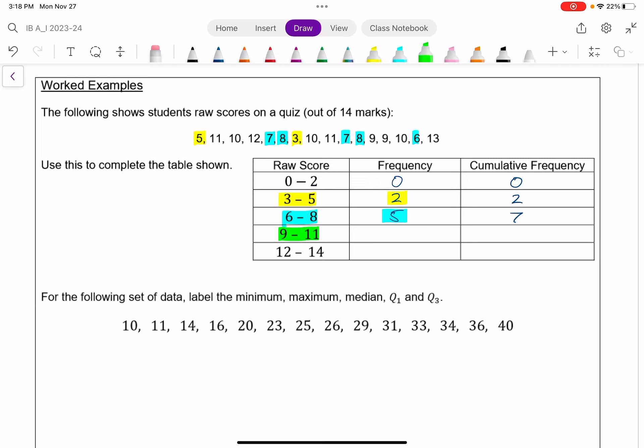9 and 11 should have 7. This is the mode here. So there should be 7 scores between 9 and 11, including those. I see all of those, so there's a frequency of 7. The cumulative frequency would be 14, those 7 plus the 7 before. And finally, this is the 2 highest scores on this quiz, a frequency of 2, and so a total cumulative frequency of 16. And that's how a cumulative frequency table looks.